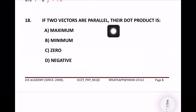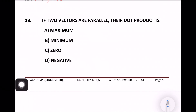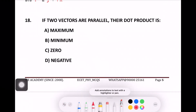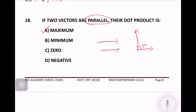Next question: If two vectors are parallel, then their dot product is maximum. Two parallel forces give a maximum dot product, while two perpendicular forces give a minimum. So parallel is maximum.